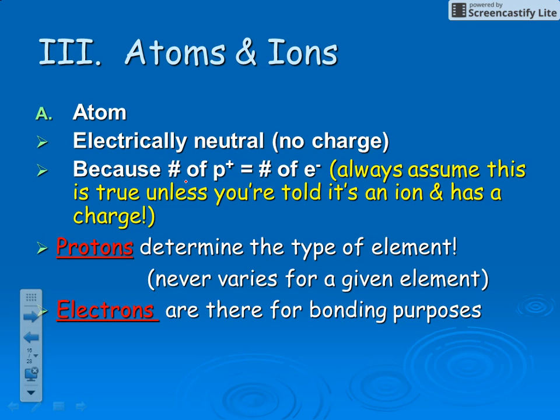Atoms are electrically neutral because the number of protons equals the number of electrons. Protons are found in the nucleus and electrons are found in the electron cloud. You should always assume you're dealing with an atom unless you're specifically told it's an ion with a charge.